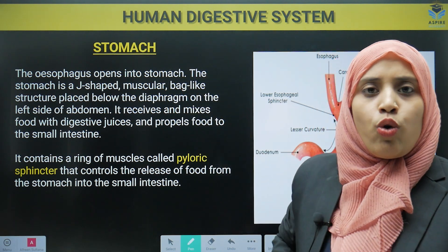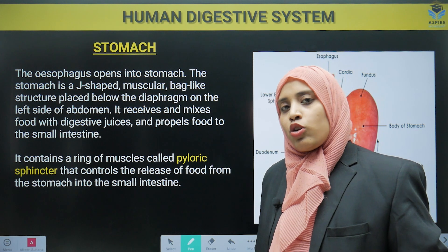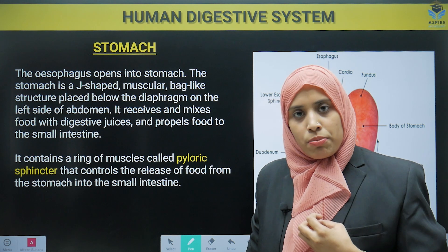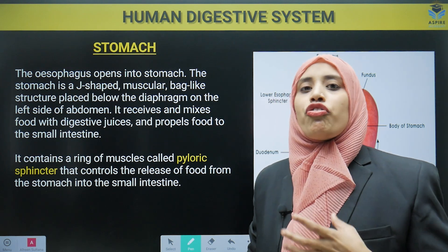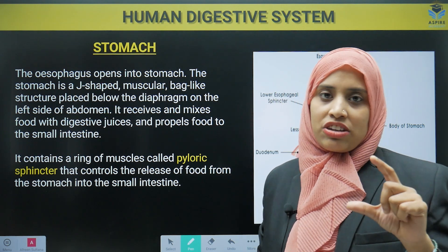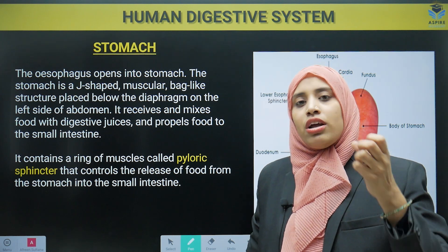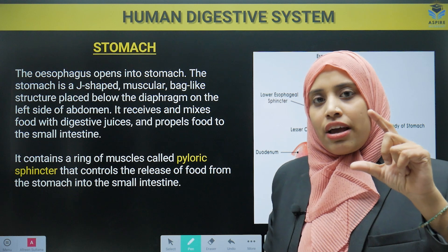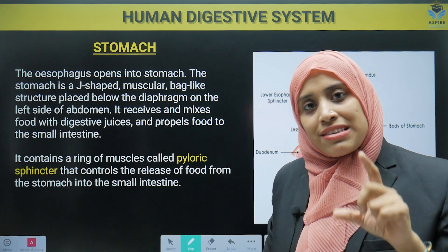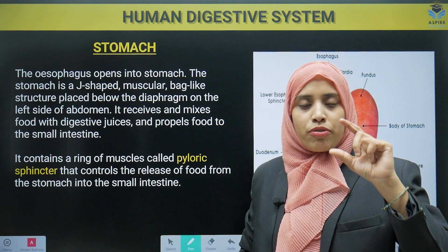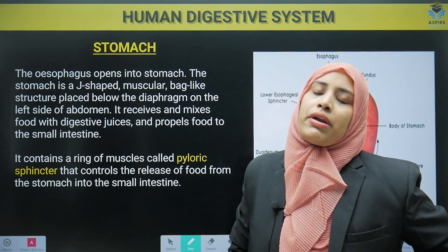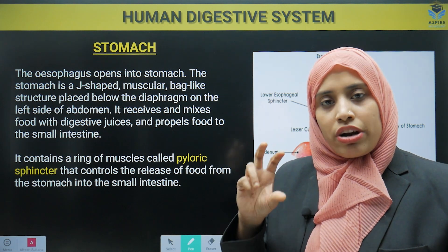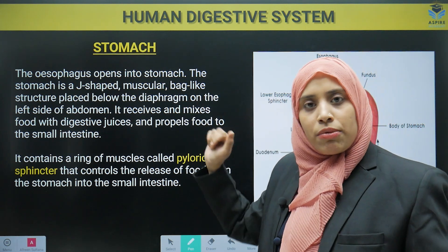Stomach. When we eat food, it passes from the mouth to the buccal cavity, then to the esophagus, which is a tube-like structure, and comes directly to the stomach. The esophagus is a tube-like structure where there is peristalsis movement, meaning food is pushed by peristalsis — muscular contraction and relaxation — and finally the food comes to the stomach.